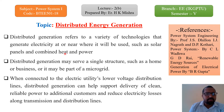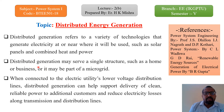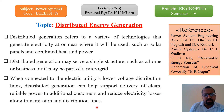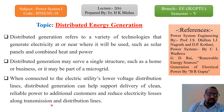Distributed generation is especially beneficial for desert areas, hilly areas, and rural areas. It may serve a single structure such as a home or business, or it may be part of a microgrid. In the microgrid lecture, I already discussed microgrids connected through different types of energy generation sources like solar, wind, and different storage units. When connected to electric utility lower-voltage distribution lines, distributed generation can help support delivery of clean, reliable power and reduce electricity losses.